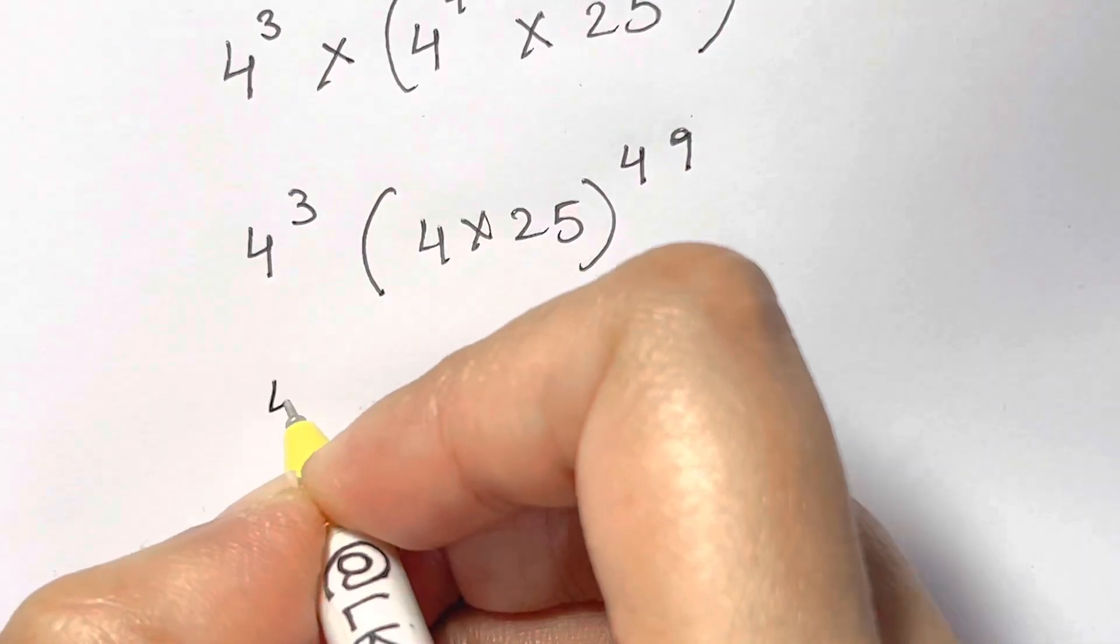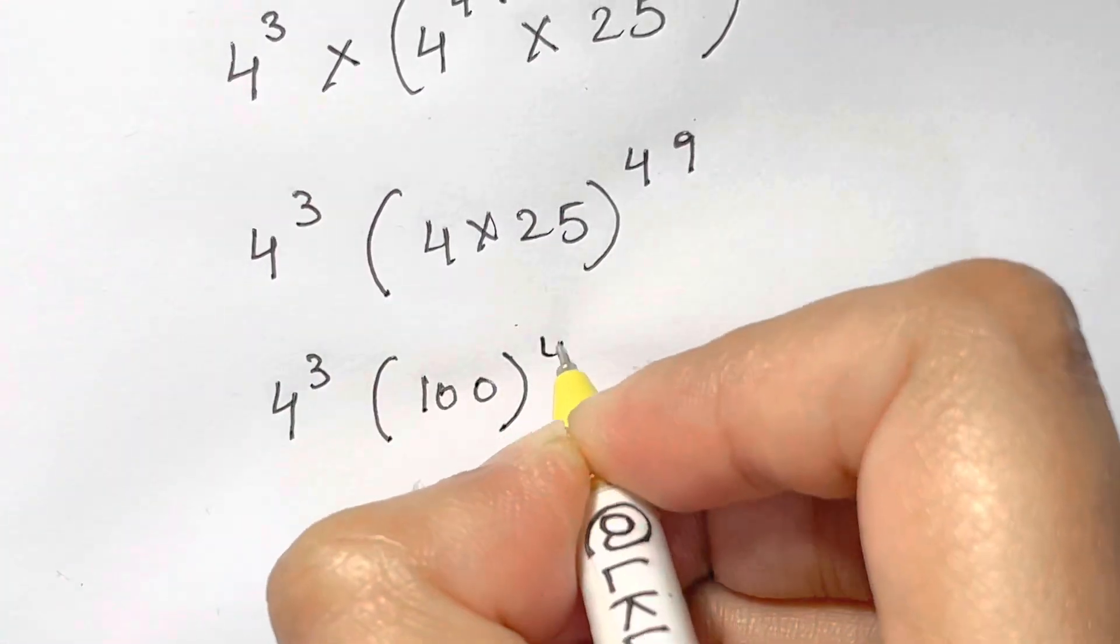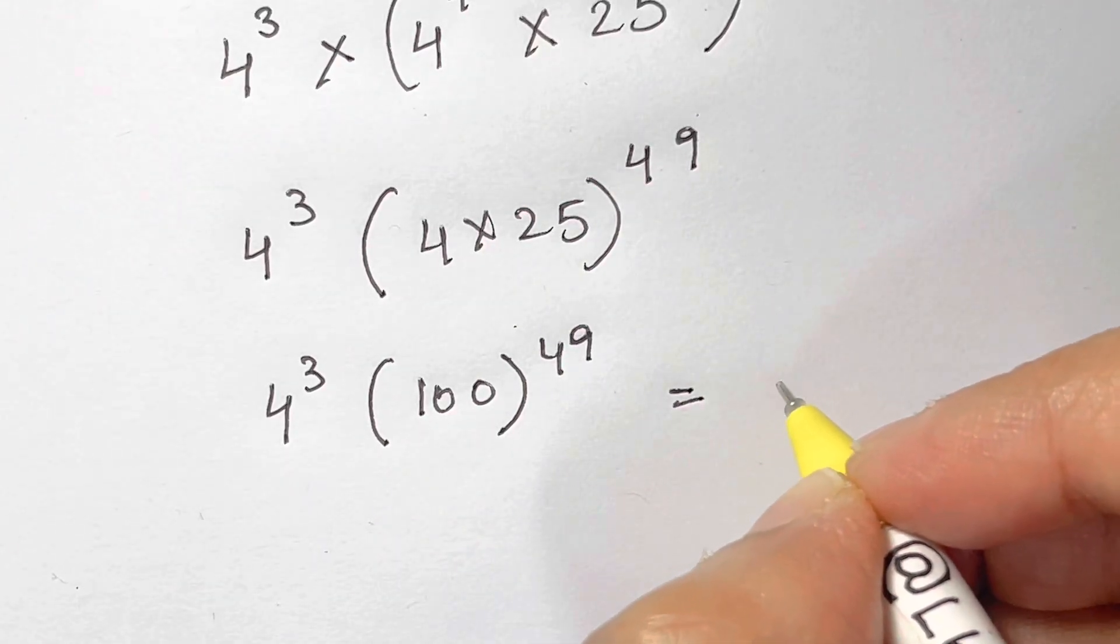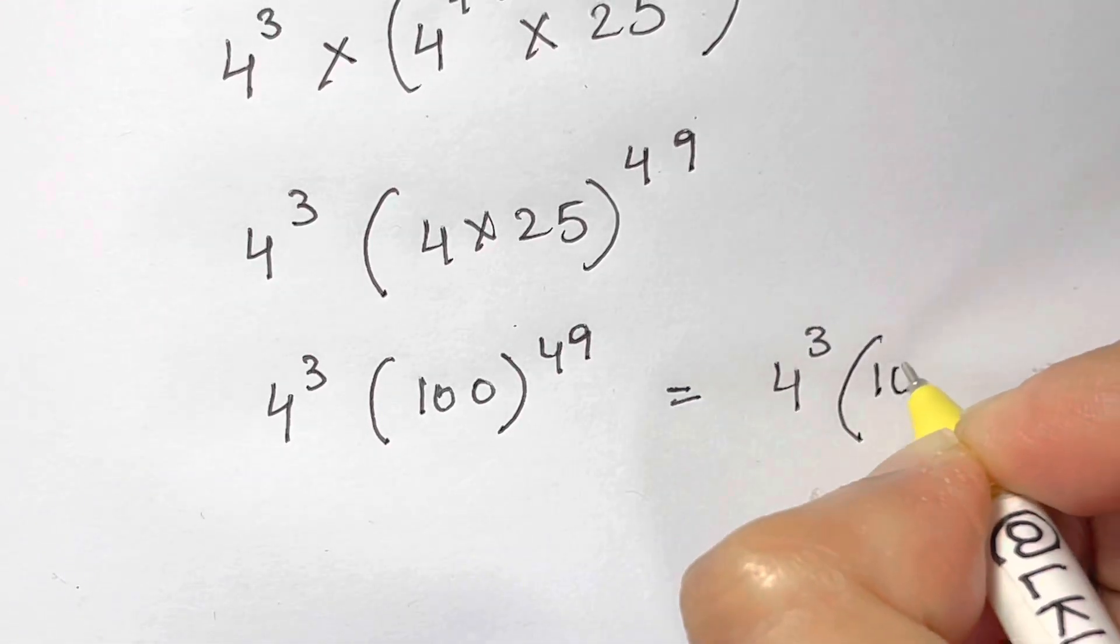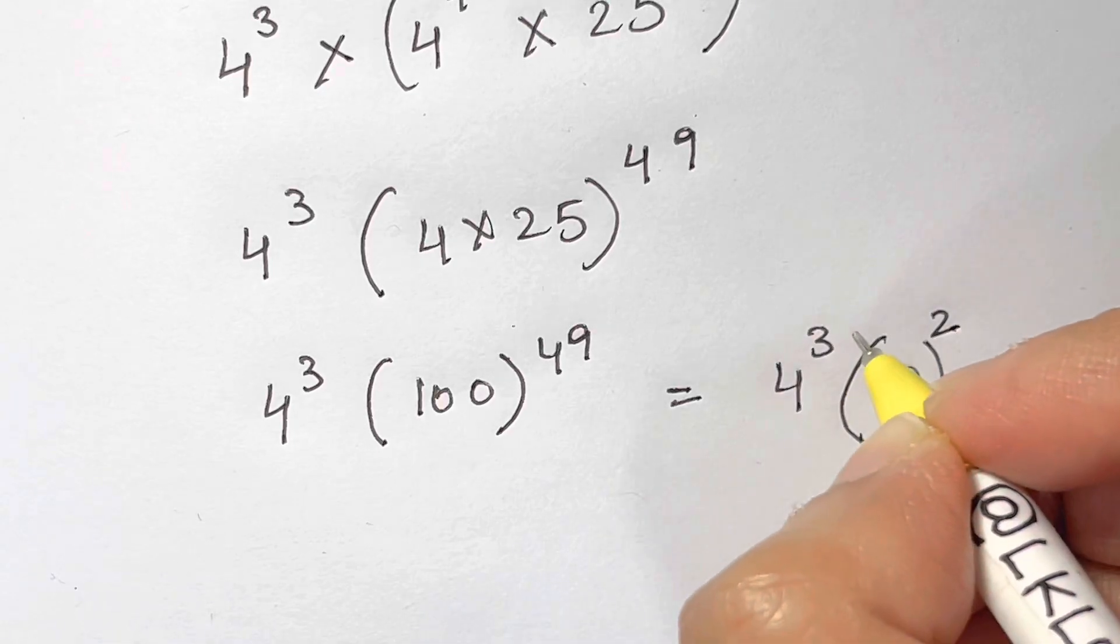It's 100. So we have 100 to the power of 49. And as we know, 100 can be written as 10 squared, so we have 4 cubed times 10 squared whole to the power of 49.